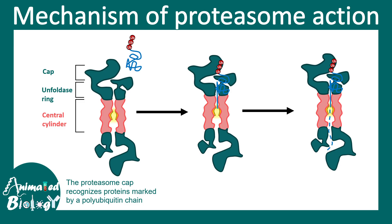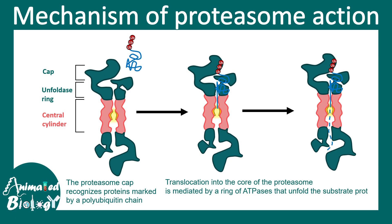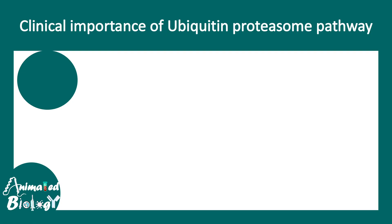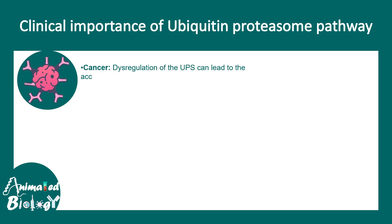Overall, the proteasome cap recognizes the polyubiquitinated protein, and translocation of the protein to the catalytic core occurs, which degrades the protein in an ATP-dependent manner.